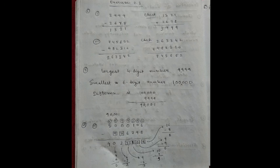Next, number 3. What is the difference between the largest number of four digits and smallest number of six digits? The largest four digit number is 9,999. Smallest six digit number is 1,00,000. So, difference is 1,00,000 minus 9,999 is equal to 90,001.